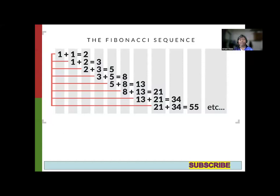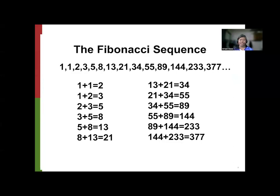Therefore, a Fibonacci number must be defined using a recursive definition: F sub 1 and F sub 2 are equal to 1 — these are the seeds. The recursive rule is F sub N equals the sum of the two preceding Fibonacci numbers. So the first two Fibonacci numbers, when added, give the third. Adding the second and third gives the fourth. Continuing this way: 2 plus 3 gives 5, 3 plus 5 gives 8, 5 plus 8 gives 13, and so on. That's why we say F sub 10 is 55. This is how we generate the Fibonacci sequence — by simply adding the two preceding numbers to get the next.